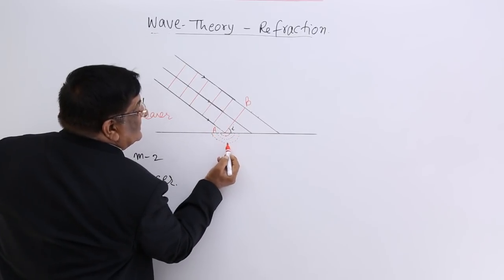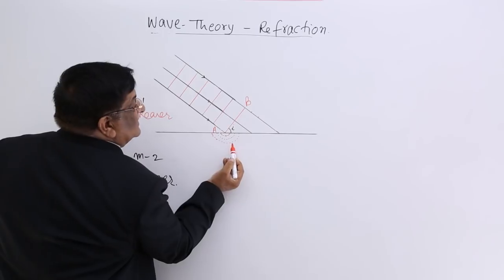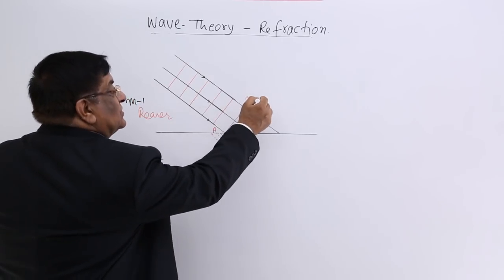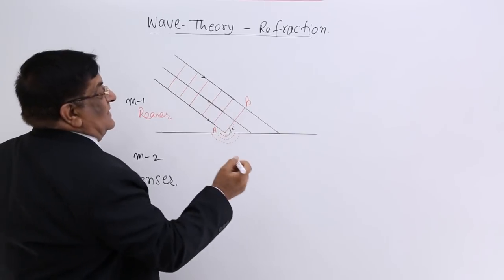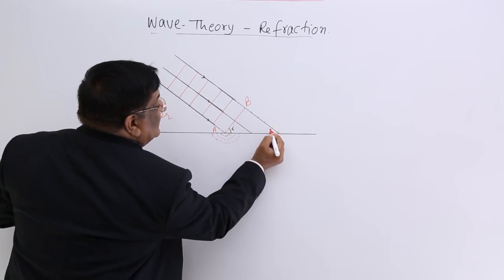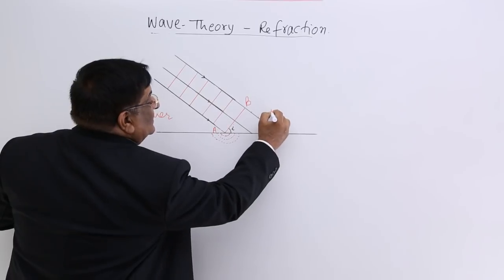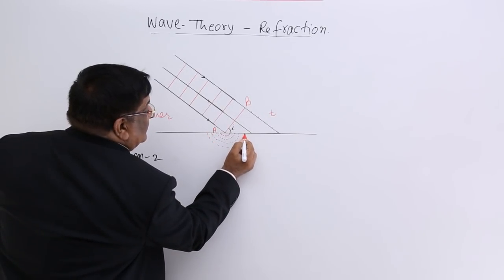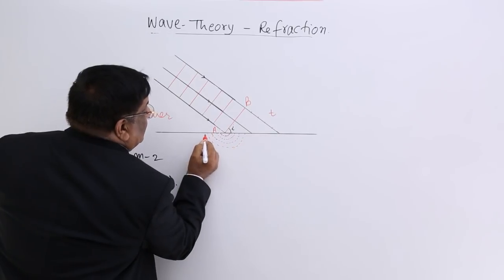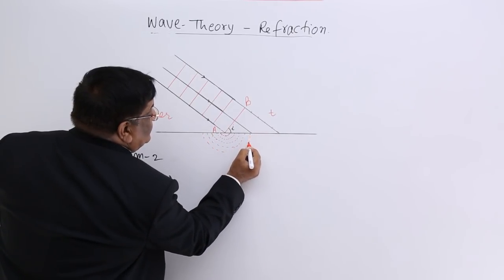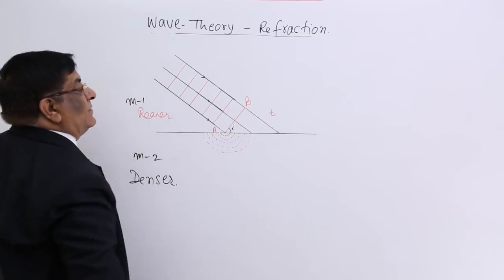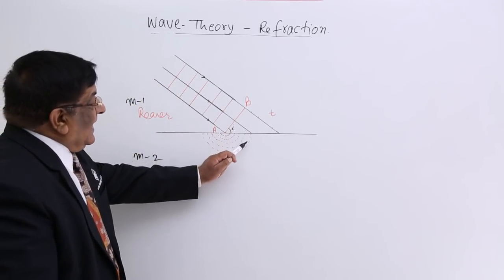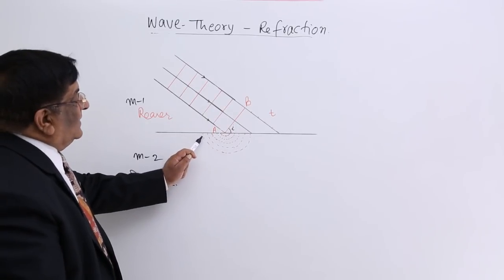Every second, in the rarer medium the disturbance covers a larger distance, while in the denser medium it covers a smaller distance. After time T, the disturbance from point A has formed a wavefront at that point.